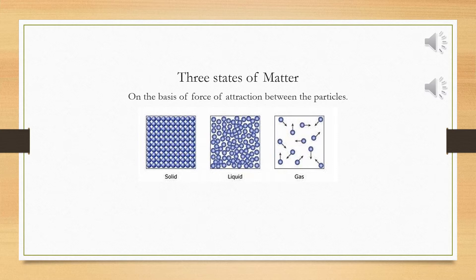In solids, the particles are very close to each other because they have strong intermolecular forces between them. In case of liquids, particles are a bit apart from each other because they have slightly less force of attraction. Whereas in case of gases, the force of attraction is very, very less, hence the particles are very far from each other.